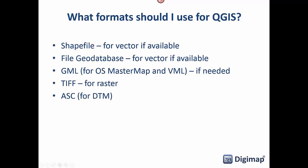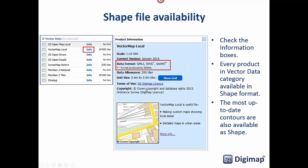For raster data there are TIFFs, and for the digital terrain model rasters there's the ASC format — they will all open in QGIS. Most vector formats now allow you to take the shapefile format, except MasterMap, where file sizes prohibit shapefiles so we have to use file geodatabases. The most up-to-date contour layers, Terrain 5 and Terrain 50, are also available in shapefile.